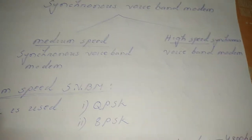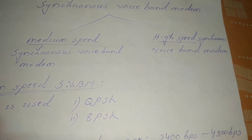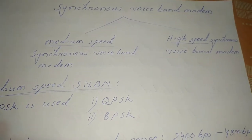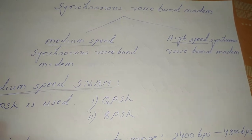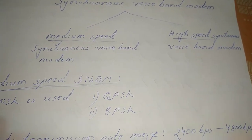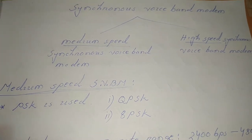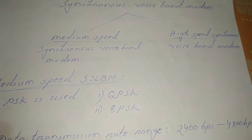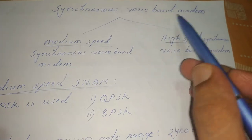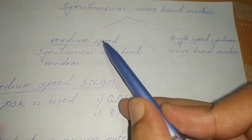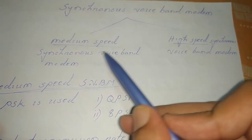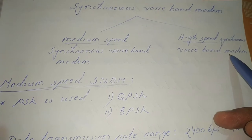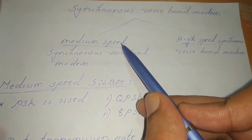Voice band modems are classified as synchronous and asynchronous, and based on speed they can also be classified as low speed, medium speed, high speed, and very high speed. Asynchronous voice band modems are called low speed voice band modems because they transmit very low speed data. Synchronous voice band modems are further classified as medium speed and high speed synchronous voice band modems, depending upon the data transmission rate.